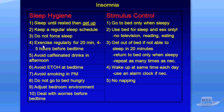Number four is to exercise regularly, but make sure you don't do it right before bed — at least four to five hours beforehand — because while exercise is good, it can limit your ability to fall asleep right afterwards. Number five is pretty obvious: avoid caffeinated drinks in the afternoon or evening, as this will ramp you up and make it more difficult to go to bed.